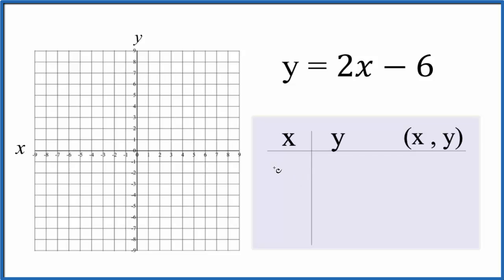So I'm gonna start off with 1, x equals 1. If x equals 1, we have 2 times 1, that's 2, minus 6. That's negative 4.